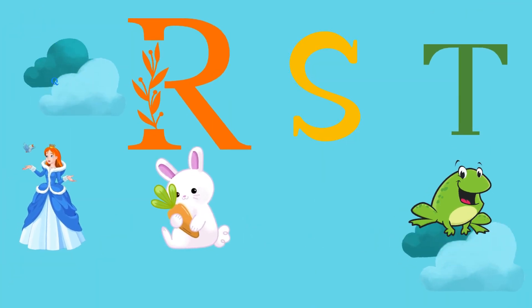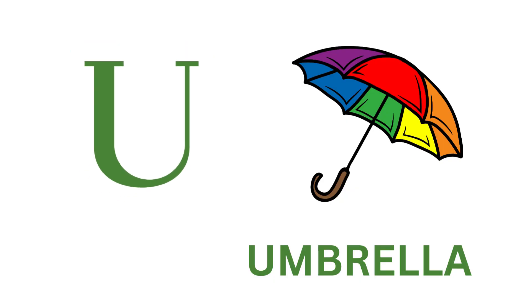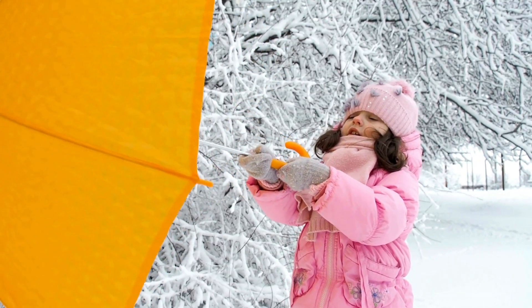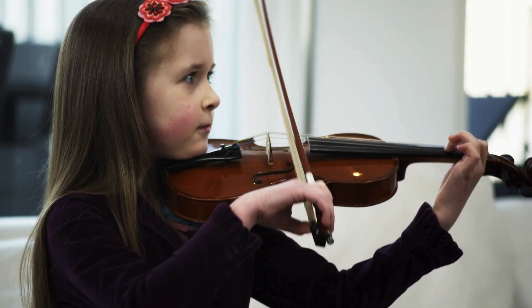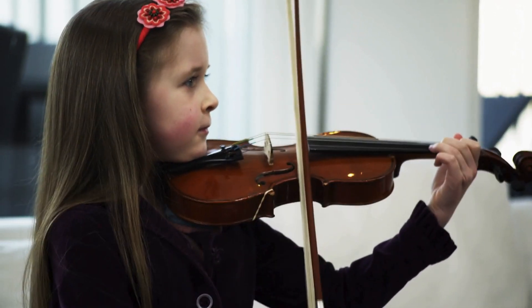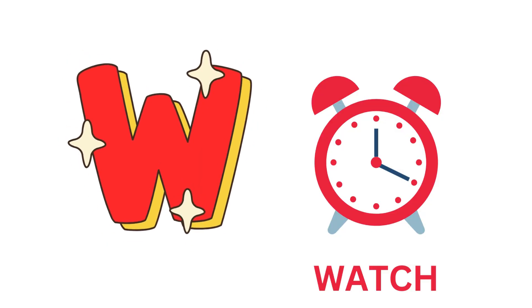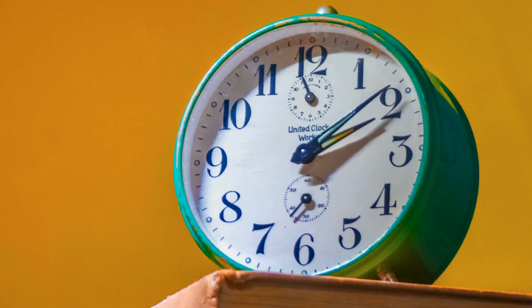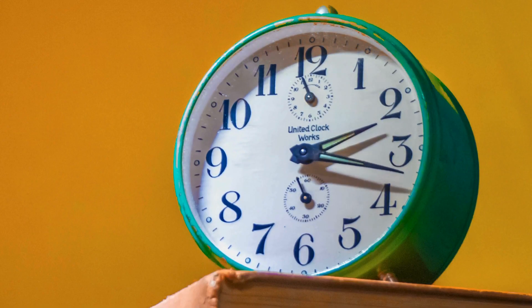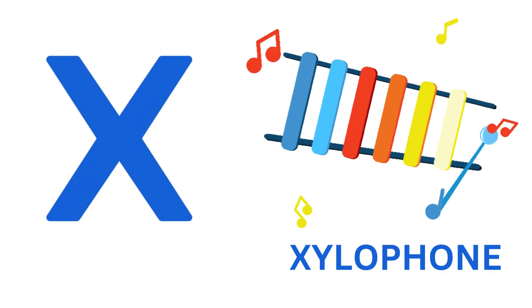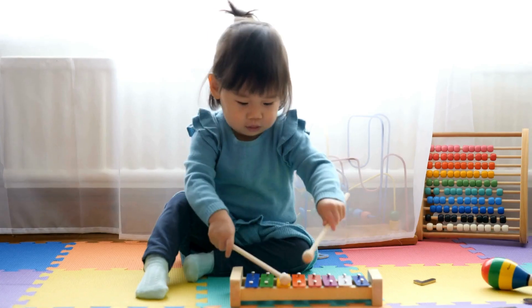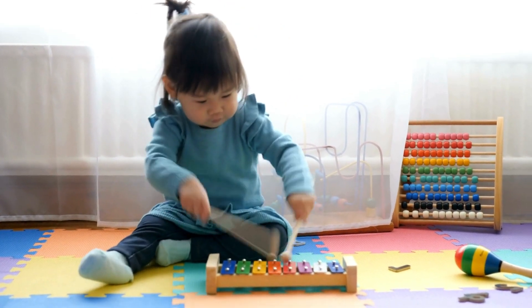U is for Umbrella, U-U-Umbrella. V is for Violin, V-V-Violin. W is for Watch, W-W-Watch. X is for Xylophone, X-X-Xylophone.